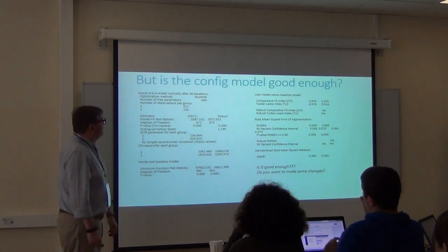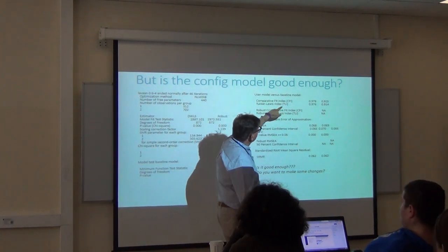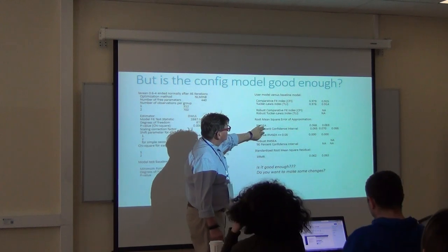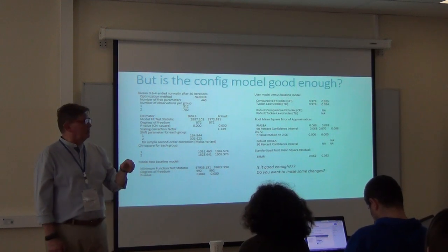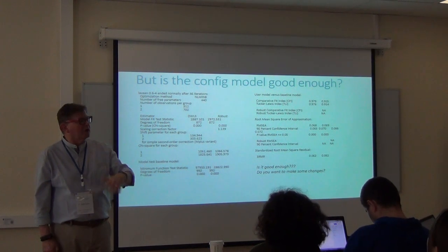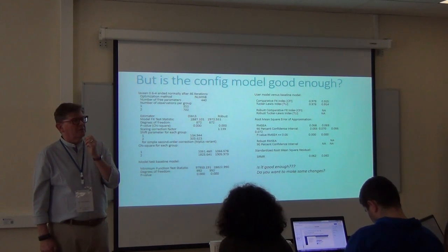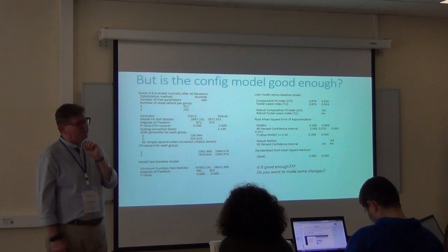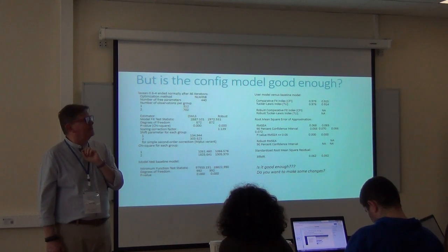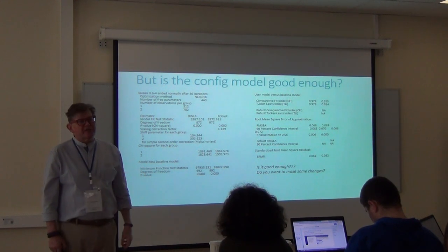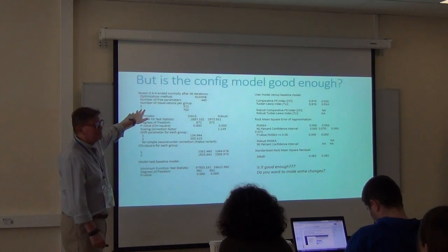But is the configural model good enough? Here is my CFI — that was okay, and this was okay — so I could say at least the configural model is publishable and that it tells us something. I wonder if comparing the two CFIs might allow me to argue that the metric model is actually okay, and that the chi-square test is just too sensitive — something I can explain away earlier in the methodology section.